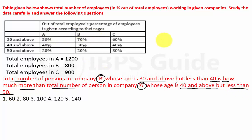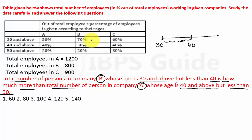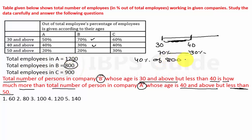Consider Company B. These are the persons whose age is 30 and above, and these are the persons whose age is 40 and above. So 30 and above but less than 40 means we take the difference: 30 and above in Company B is 70%, and 40 and above is 30%. The difference is 70 minus 30, which is 40%. So 40% of 800 — 10% is 80, so 40% is 320.